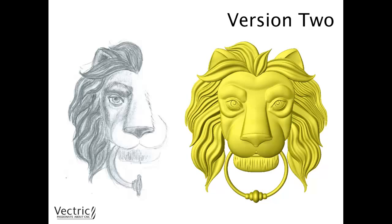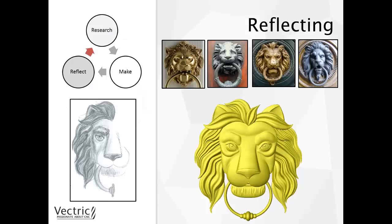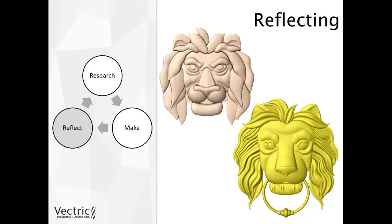Working through this creative process again, I moved on and thought about reflecting on what I had made against my research material — again that overlap of reflecting through research. I was fairly happy, however the more I looked at the research, I realised something wasn't quite right with my model. Taking a step back and looking at version 1, I thought about how using the same brief I had got two totally different outcomes. This required me to really think about what was different between the models I was creating and the reference material — to play a game of spot the difference.